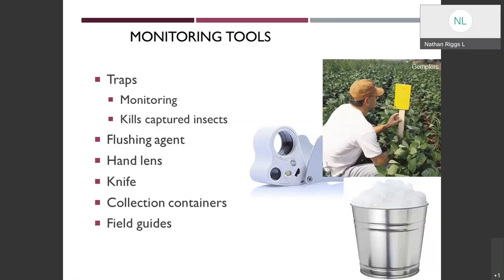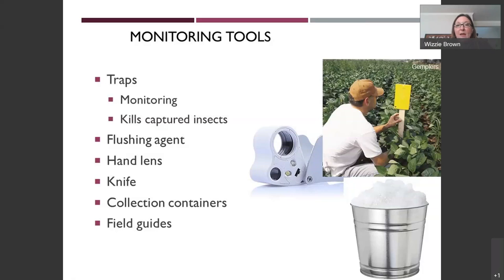If you are monitoring, you may want to use things like traps. A lot of people use yellow sticky cards — there are also white and blue ones, and it really depends on what insects you're trying to attract. You can even make these yourself using colored heavyweight paper or poster board with spray adhesive. These will not only monitor your insects but also kill whatever insects get stuck on the glue.